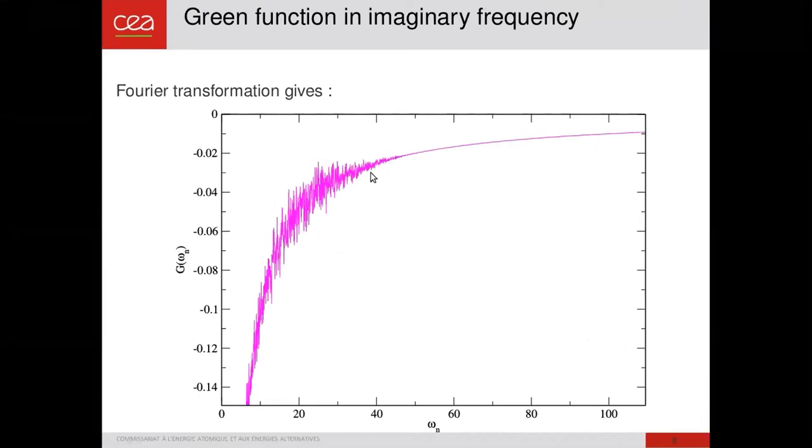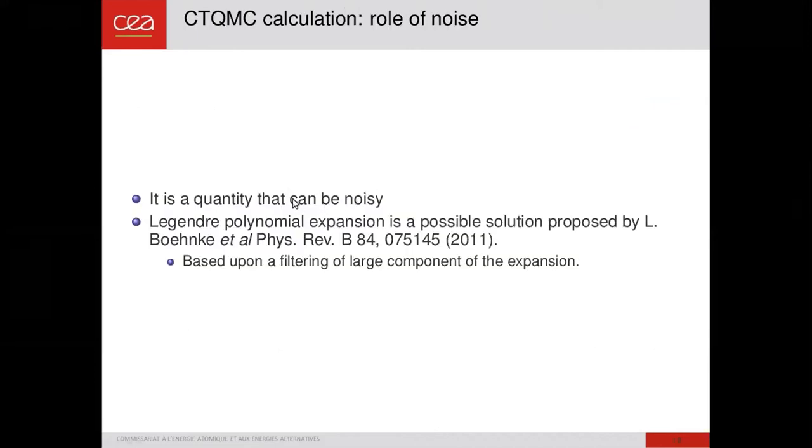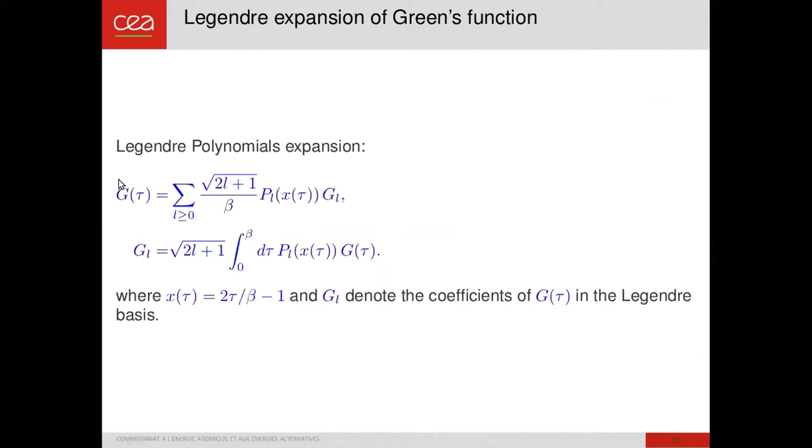So to remove this noise, the proposition has been proposed by Lewin Boehnke in 2011, is to do a Legendre polynomial expansion. So a Legendre polynomial expansion is just like this. We express the Green function as a function of Legendre polynomial with a coefficient G_l, which can be computed like this.